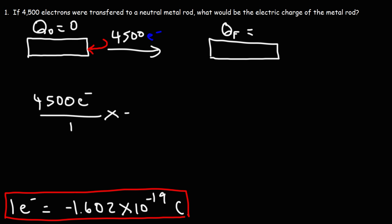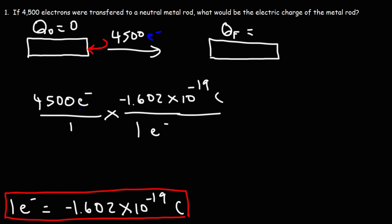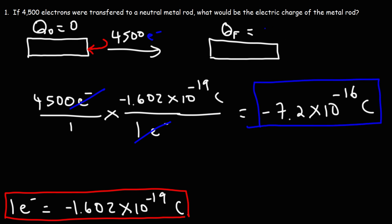Let's convert it to charge. We put one electron on the bottom and equate that to this quantity of charge, setting it up so the unit electrons will cancel. Multiplying the two numbers, you should get negative 7.2 times 10 to the negative 16 coulombs. That's going to be the new electric charge of this metal rod.